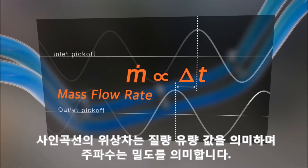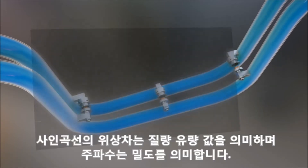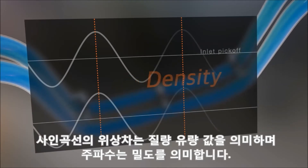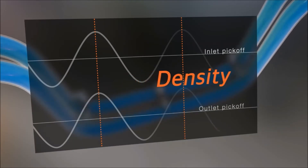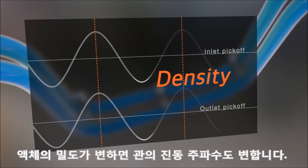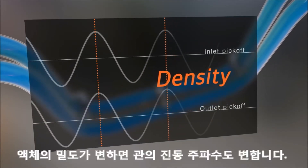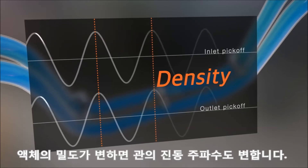While the sine wave phase shift indicates mass flow, the wave frequency indicates density. When the liquid density changes, the vibrating frequency of the tubes also changes.